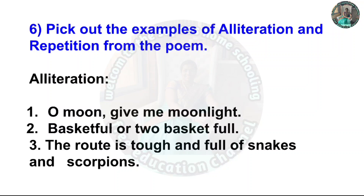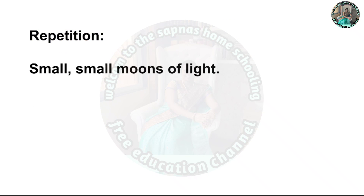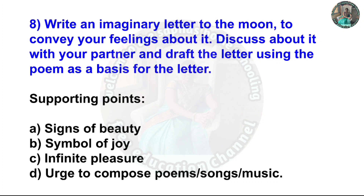Question 6: Pick out the examples of alliteration and repetition from the poem. Alliteration: 1. 'Oh moon, give me moonlight.' 2. 'Basketful or two basketful.' 3. 'The root is tough and full of snakes and scorpions.' Repetition: 'Small small moons of light.'